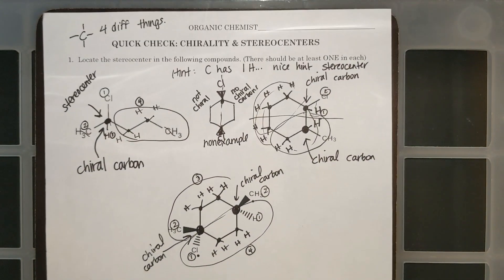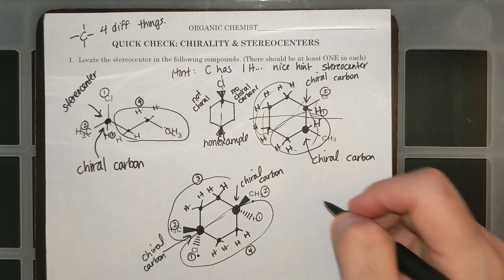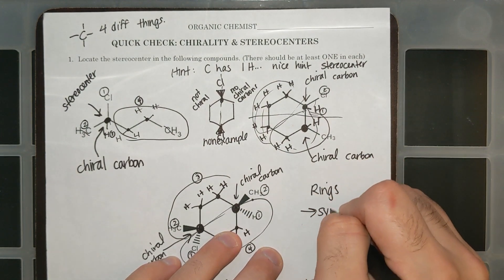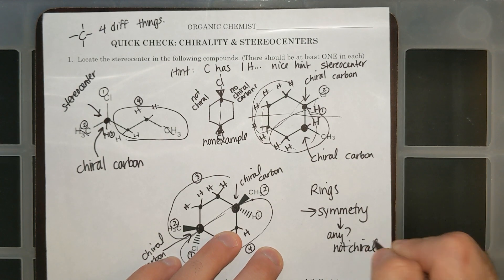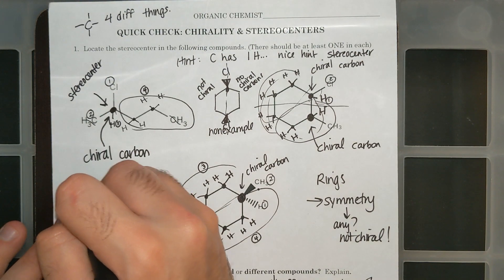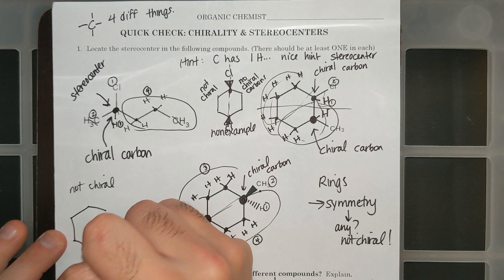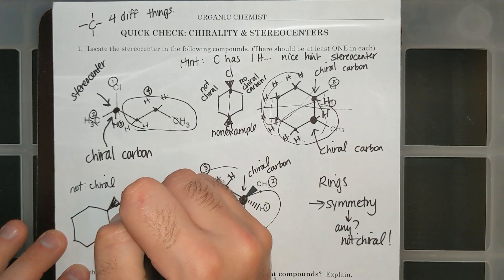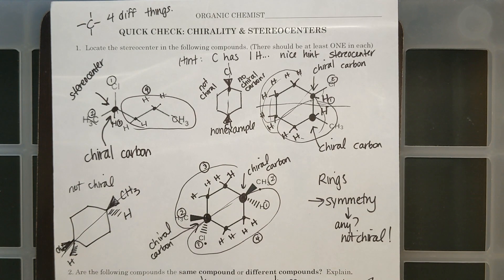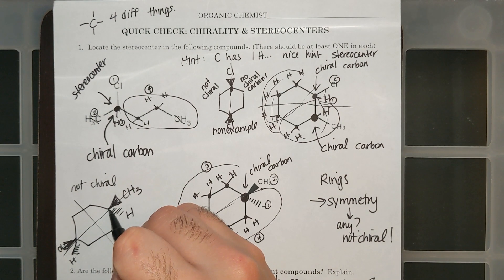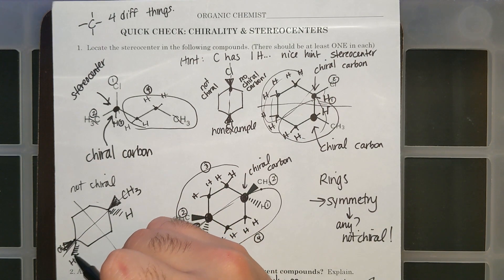To quickly recap: to find your chiral carbons, look for a carbon that has four different things attached to it. For rings, look for any symmetry — if there is any symmetry, the molecule is not going to have any chiral carbons and is not going to be a chiral molecule. For example, a ring with a CH3 and an H going down can be cut right down the middle and looks the same on both sides — symmetrical all around, so not chiral.